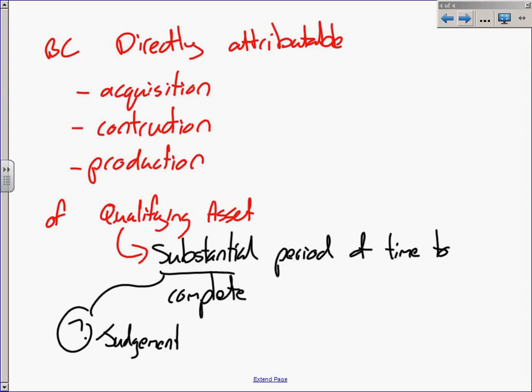What may be qualifying assets? Well, inventories, manufacturing plants, power generation facilities, intangible assets, investment properties, bearer plants. But you'll find what are not qualifying assets: qualifying assets will never be financial assets, inventory produced over a short period of time, or assets that are ready for intended use or sale when you acquire them.